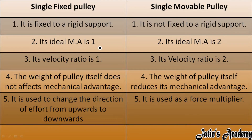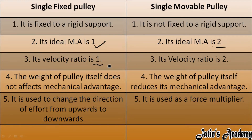For an ideal single fixed pulley, the mechanical advantage is one. For an ideal single movable pulley, the mechanical advantage is two. The velocity ratio for a single fixed pulley is one, and for a single movable pulley the velocity ratio is two.